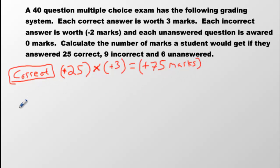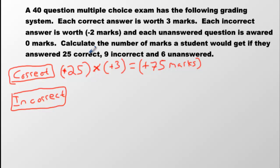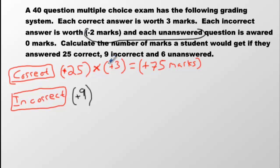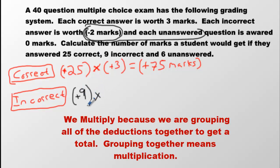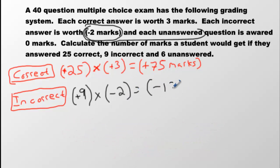Now the incorrect ones — that's where the deduction happens. He got nine questions incorrect. That's a positive nine, because you can't have negative questions. The negative comes on the deduction. So we multiply positive nine by negative two, because each wrong answer loses two marks. That gives a total of negative 18 marks.